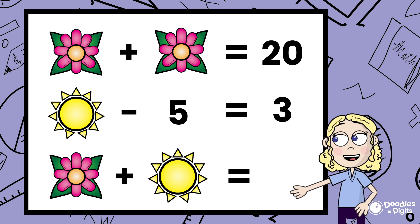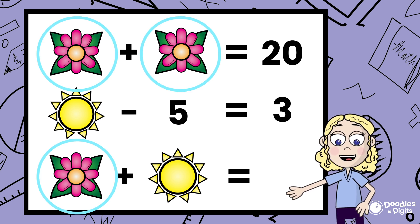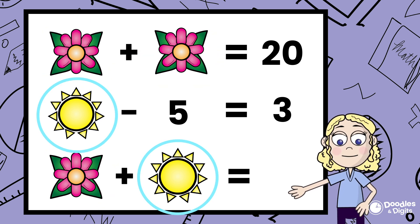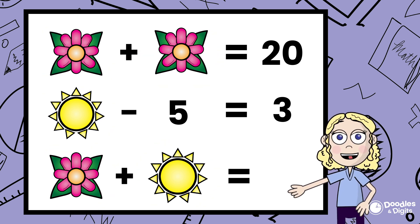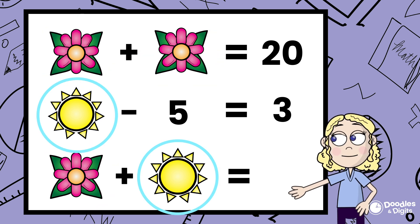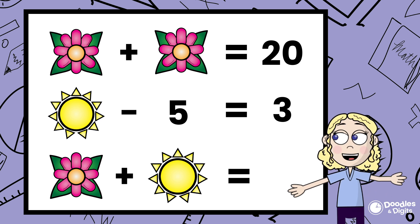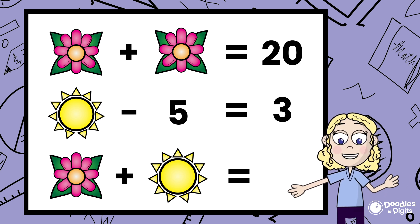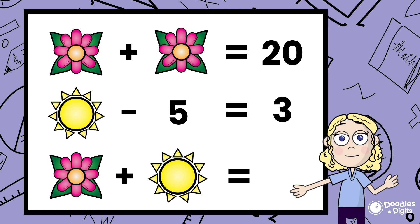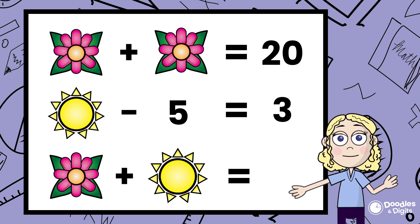So in this puzzle here, we have flowers and we have a sun. Our goal is to try to figure out what number the flowers represent and what number the sun represents. I love these puzzles because you can actually solve these in a couple of different ways.